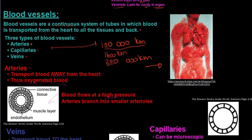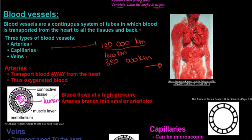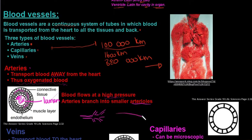Looking at the structure of an artery on the left-hand side, arteries have three layers: an outer connective tissue layer, a very thick muscular layer that helps pump blood to the rest of the body, and an inner endothelium layer. The white portion in the middle is called the lumen — that is the area in which blood flows. When arteries become smaller and branch into smaller pieces, we call them arterioles, and those arterioles will eventually branch into capillaries.